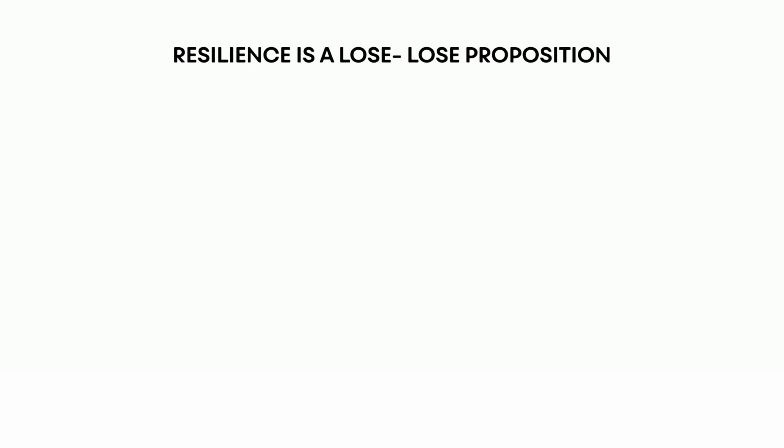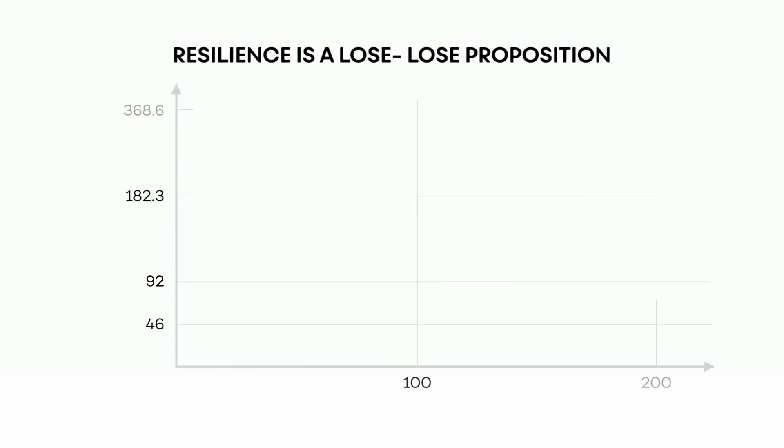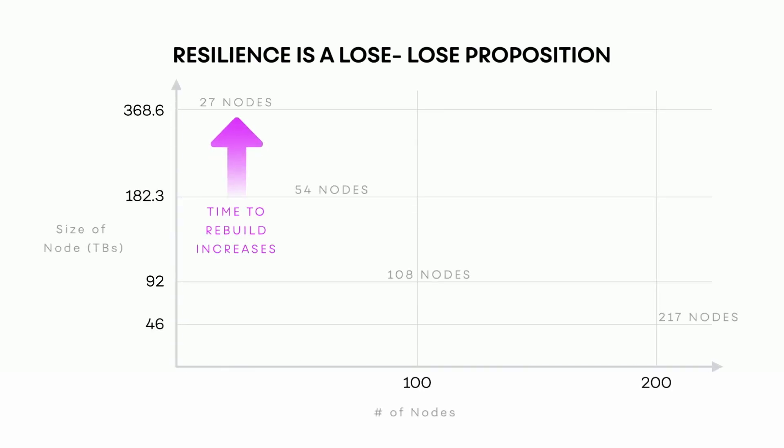As systems scale, the probability of failure actually starts to go up. Imagine you have 10 servers and a 1% chance that one of those servers will fail on a given day or month. As you have more and more servers — say now you have 100 servers — there's a much higher chance. Now in theory you're at a 10% chance that there's going to be some server failure in that same window of time.